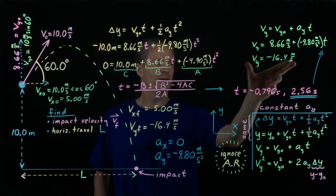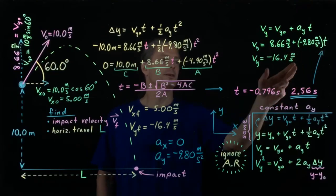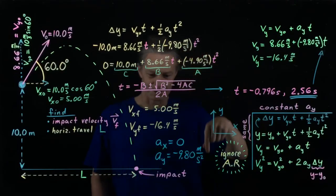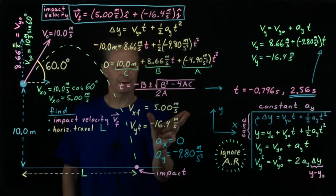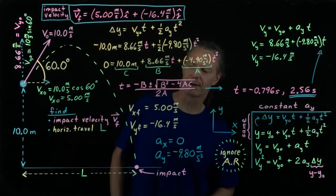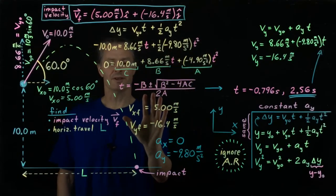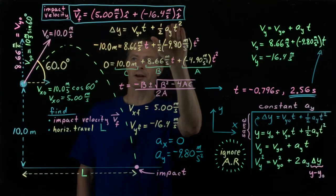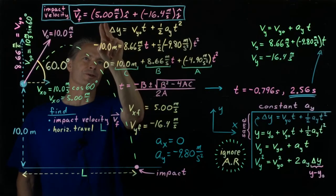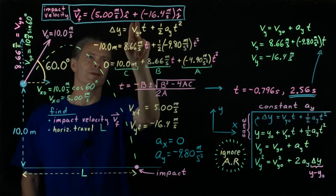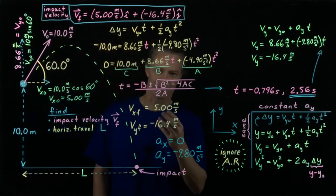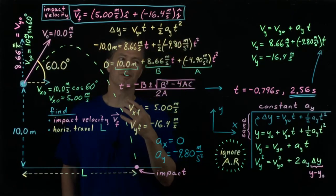We plug t equals 2.56 seconds into the y velocity equation and get that the y component of the velocity at the time of impact equals negative 16.4 meters per second, or 16.4 meters per second downward. So the impact velocity vector v final is 5.00 meters per second times i-hat plus negative 16.4 meters per second times j-hat, where i-hat is a unit vector in the positive x direction and j-hat is in the positive y direction.